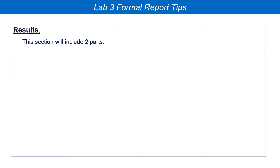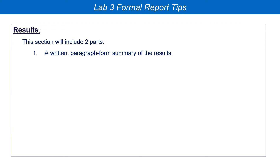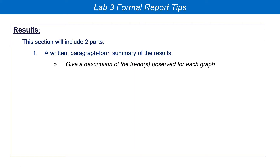I want to talk about the results section. I'm hoping at this stage everyone has at least tried to crunch the data and produce some graphs. The results section is going to include two parts: a written component in paragraphs, and the actual graphs. Make sure everything you write for me in your lab reports is in full sentences and proper paragraphs — not point form. Your results should be relatively concise: one long paragraph or two or three short ones, talking about the graphs and giving the trend.